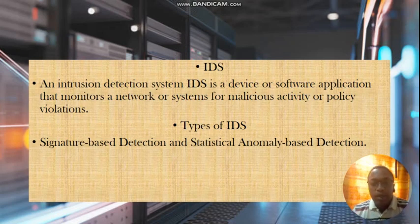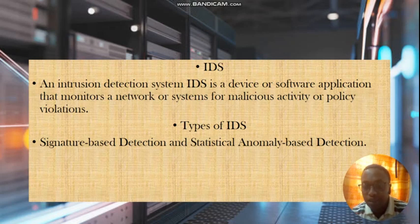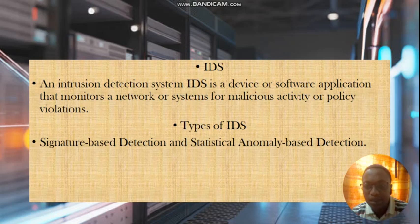There is also statistical anomaly-based detection. When you analyze the packets received in your network, there is a baseline of what it normally receives. If your network is receiving around 500 packets per second and suddenly receives 600 or 700 packets per second, that is abnormal. Based on the statistics the intrusion detection system has, it will notify you that the traffic is abnormal and trigger you to investigate what packets are being received.